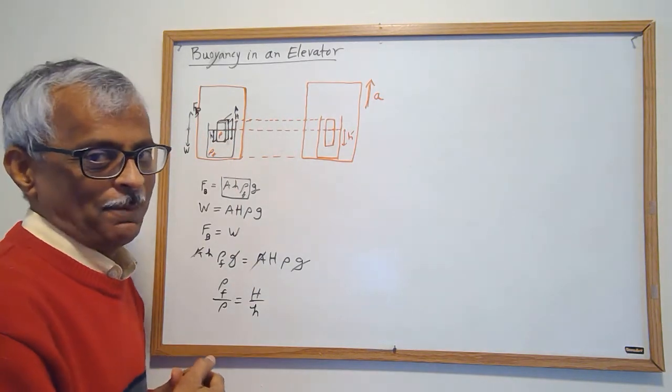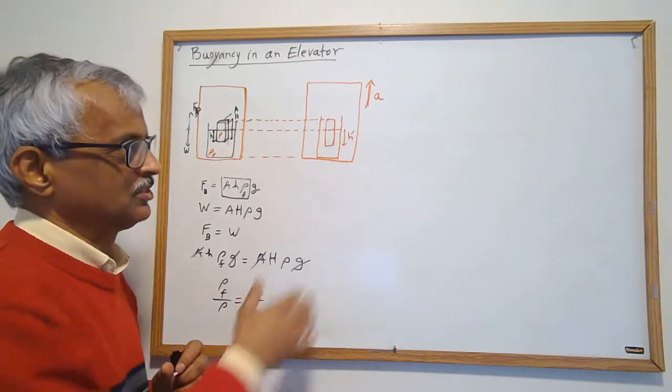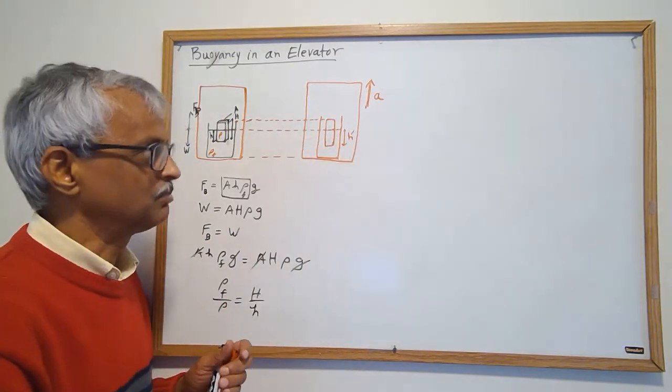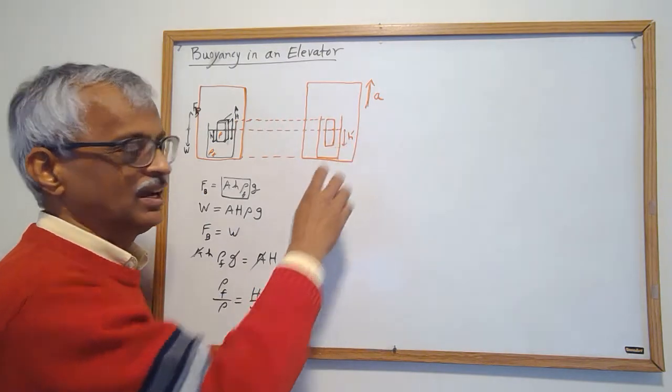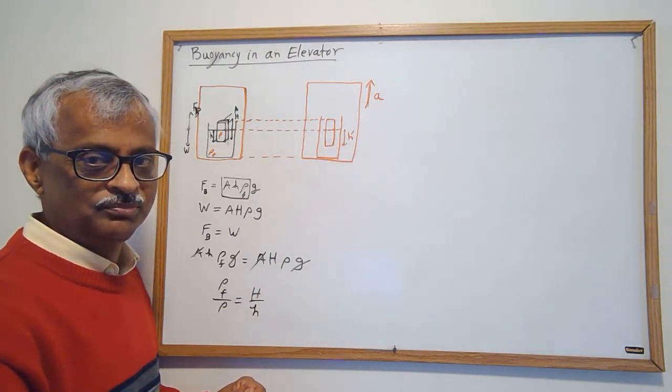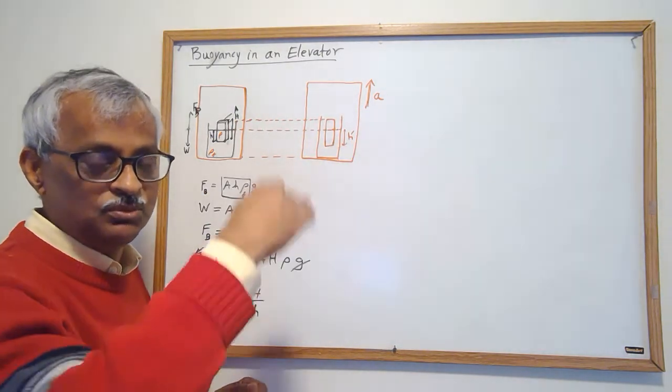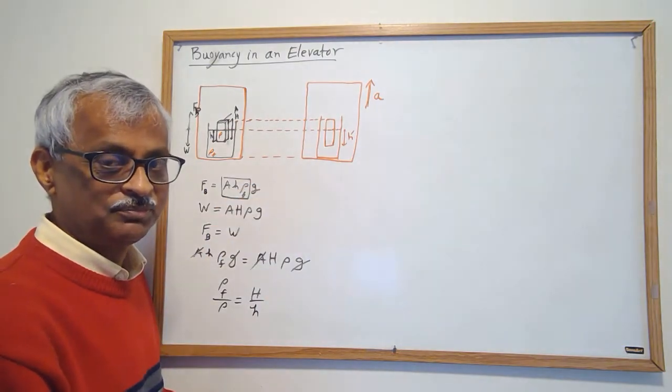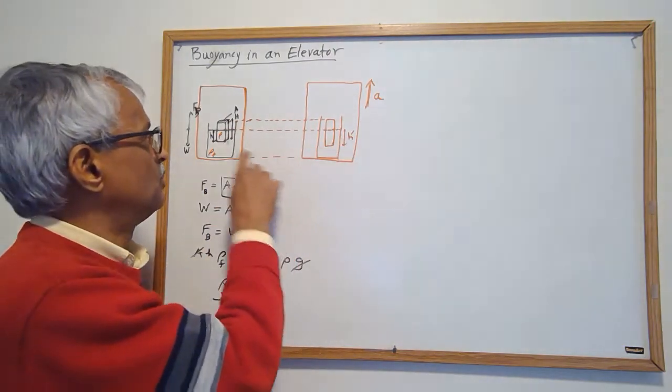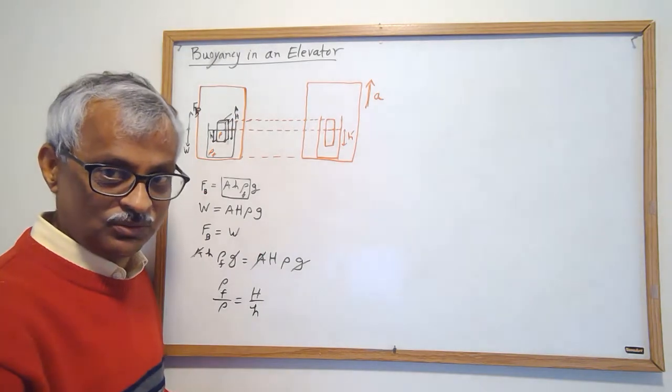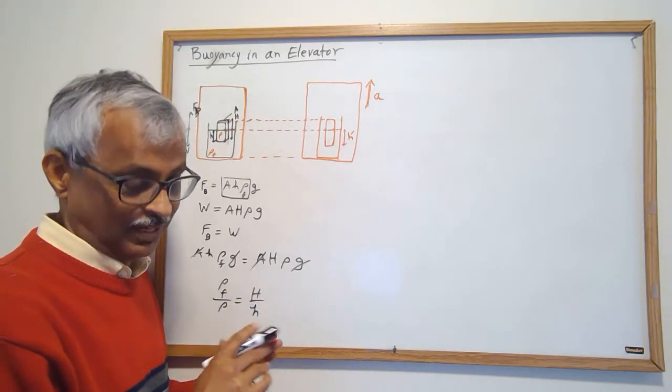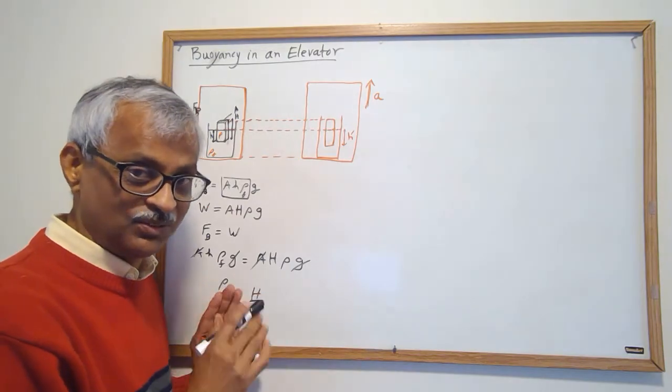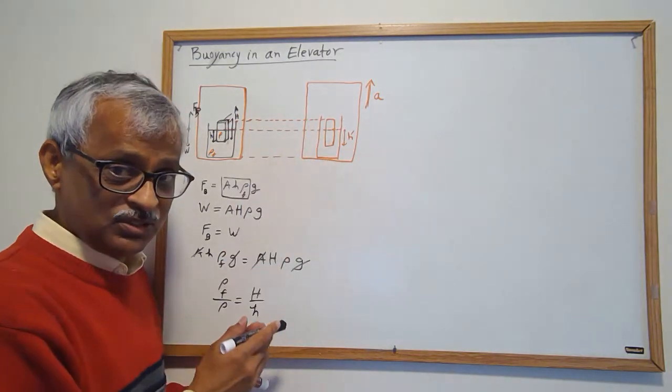We can actually answer that question by looking at the forces on this block right now. So assume the new height is h prime. I don't know how much new submerged height h prime is, I don't know if h prime is more than h or less than h. I don't know that at this point. I'll just set up the F equals ma and see what happens.